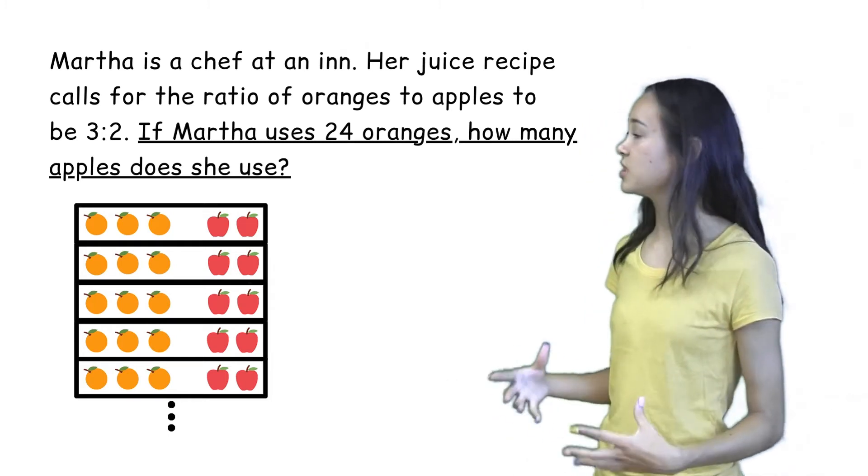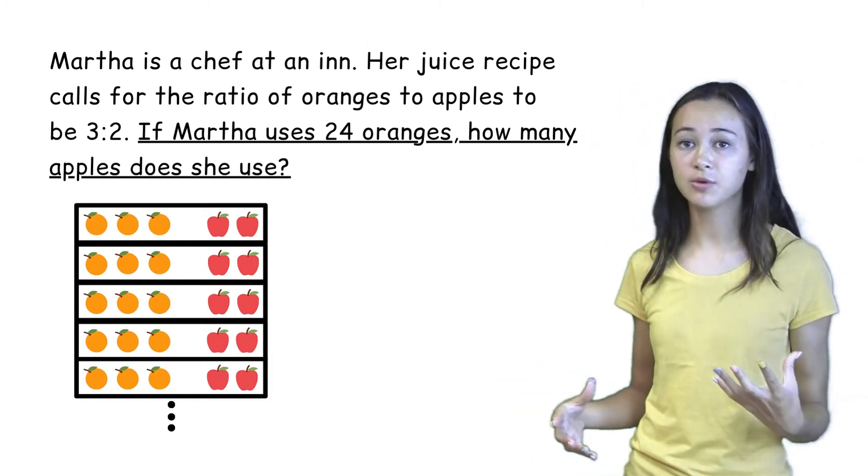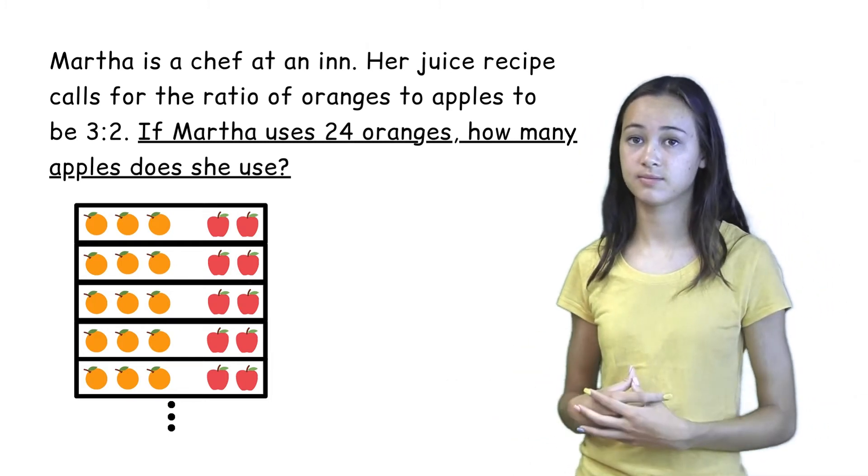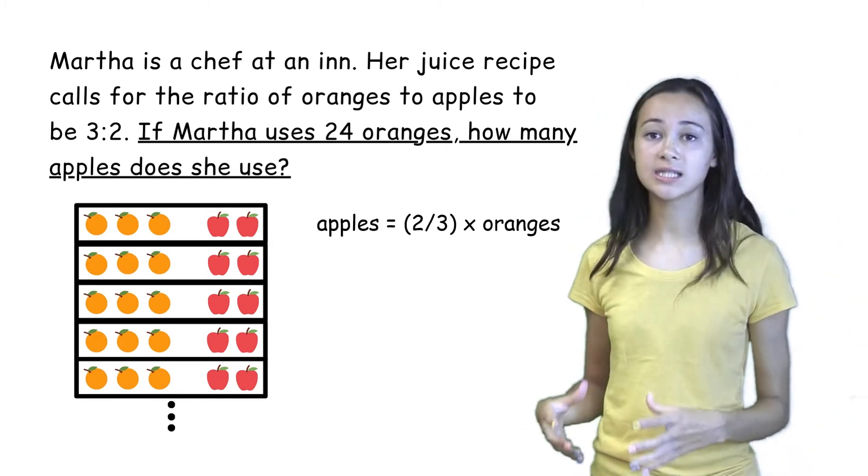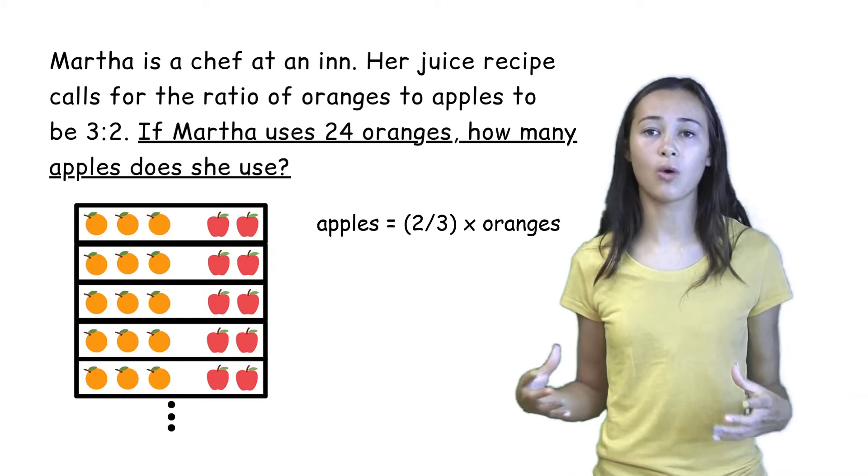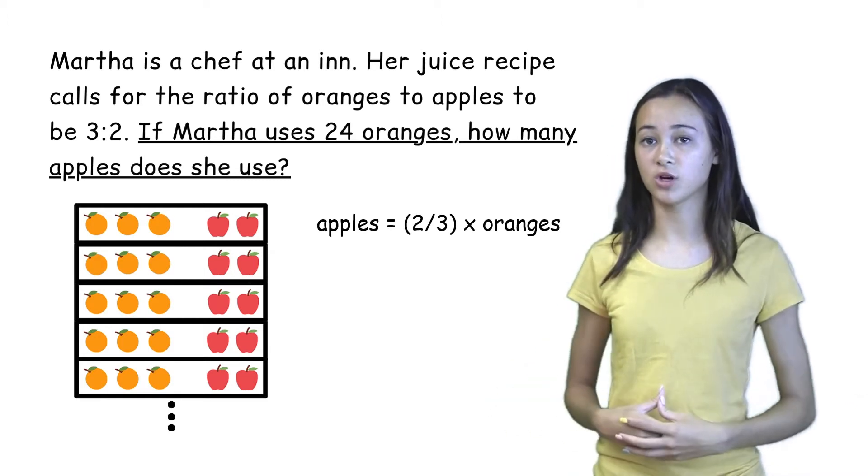So what is the relationship between the number of apples and the number of oranges? No matter how many groups Martha uses, we can see that the number of apples is always two-thirds the number of oranges.